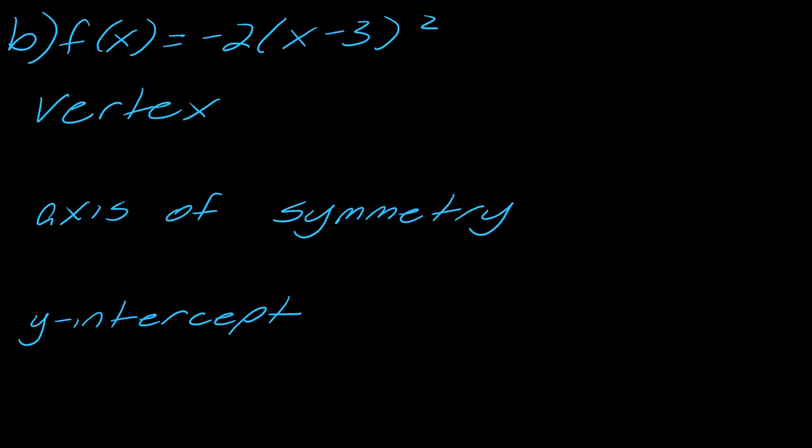So let's keep going with this. Now let's go to the next example. In this case, notice that I have nothing being added on the outside. Sometimes this throws people off. You could just think of this as there's an invisible plus 0 here. Therefore, my vertex will be (3, 0), and my axis of symmetry will be x = 3. Don't forget the x.